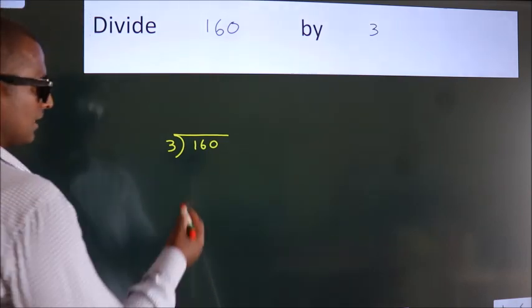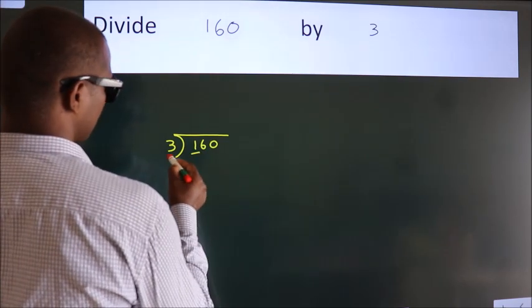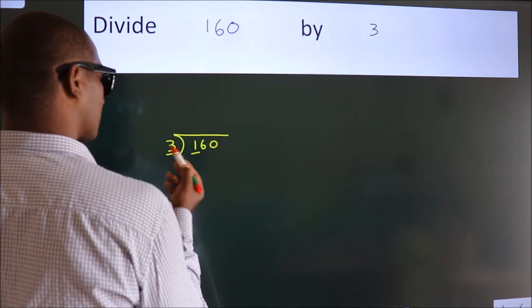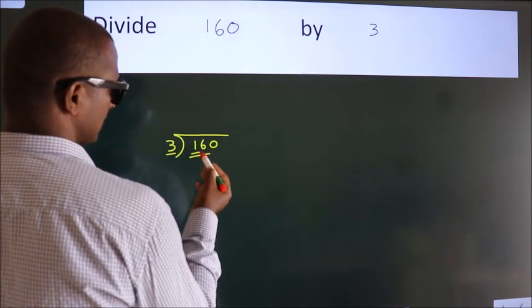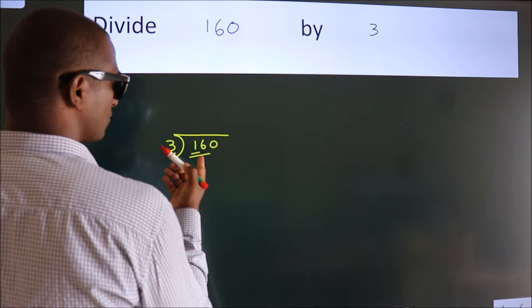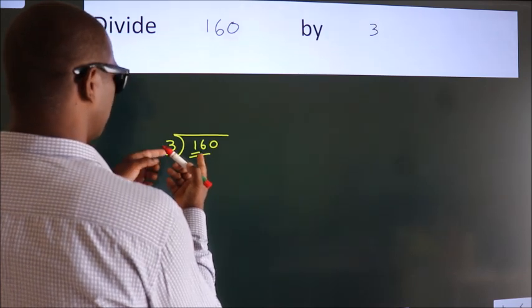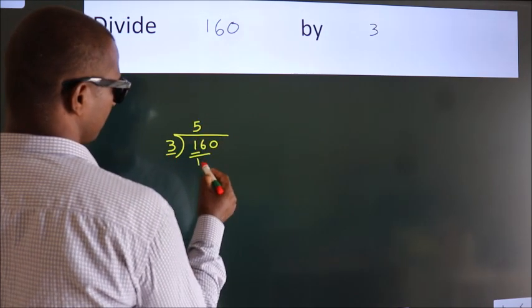Next, here we have 1, here 3. 1 is smaller than 3, so we should take 2 numbers, 16. A number close to 16 in the 3 table is 3 times 5 equals 15.